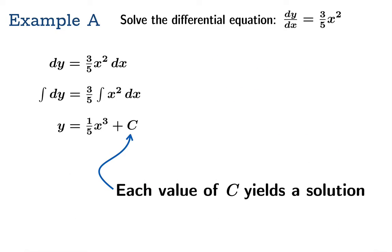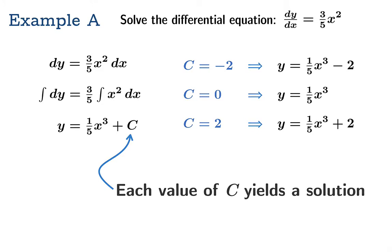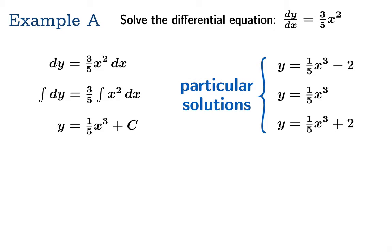Each value of c yields a different solution. For example, choosing c to be negative 2, 0, or 2 yields these three solutions. We will call collectively any such thing a particular solution.